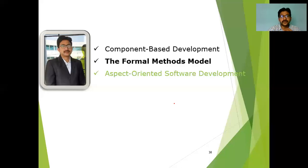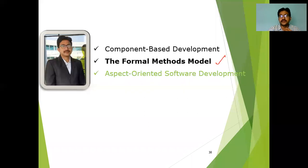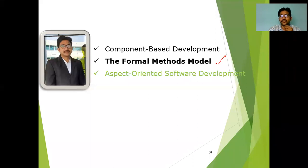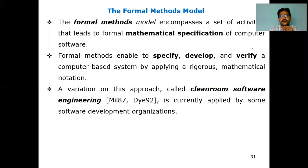The next model under specialized process models is the Formal Methods Model. The name itself indicates that when we deal with mathematical derivations, a mathematical approach will be there. When a model consists of mathematical notations or mathematical derivations — some involvement in a mathematical way — it is called the Formal Methods Model.